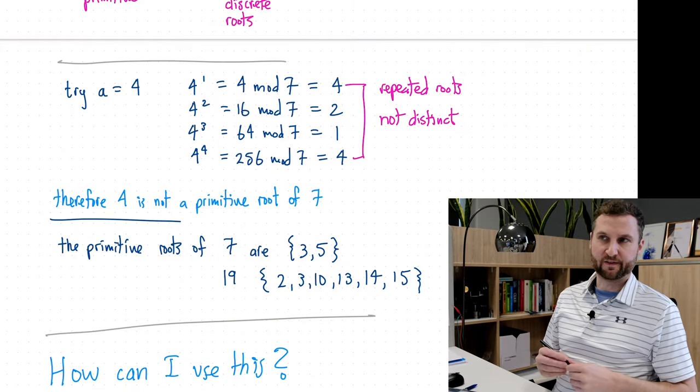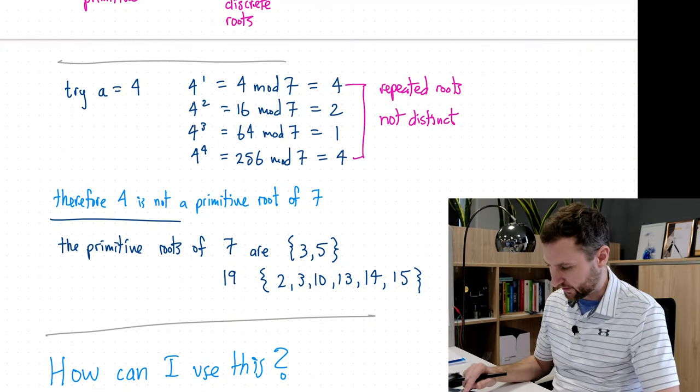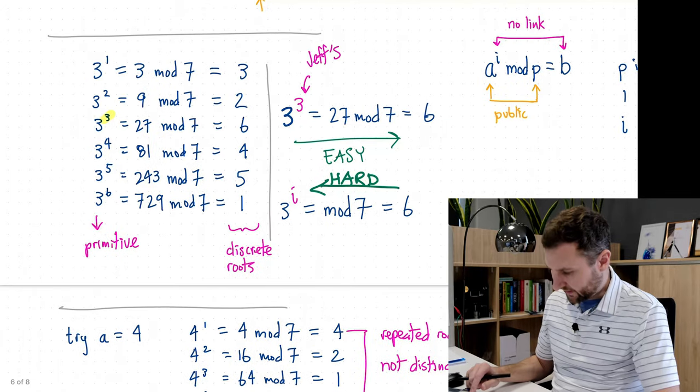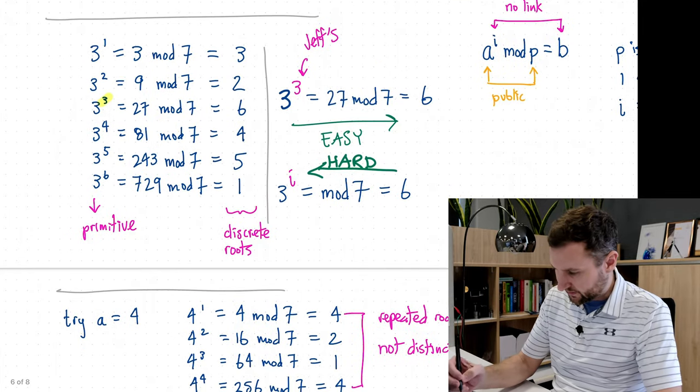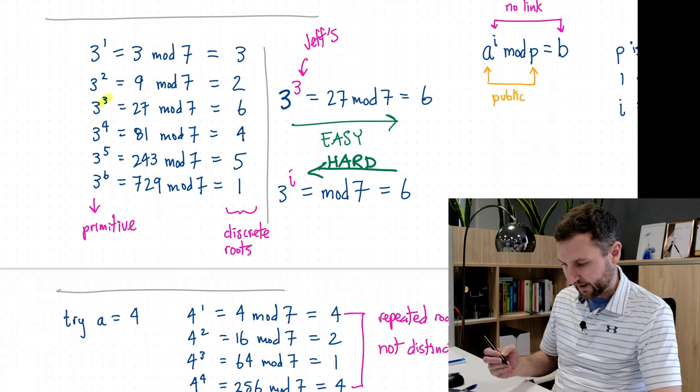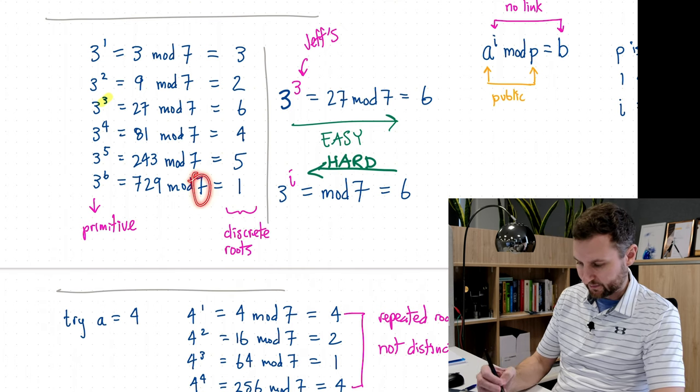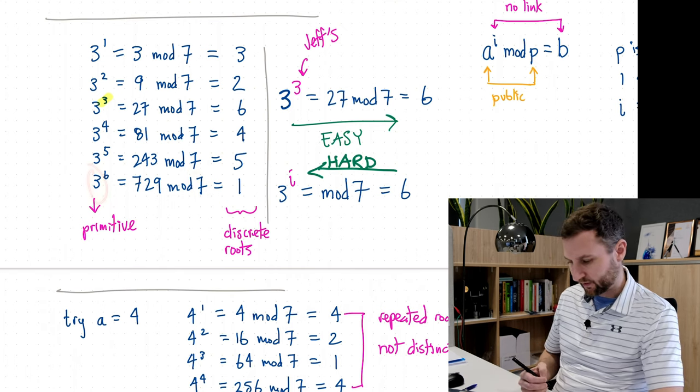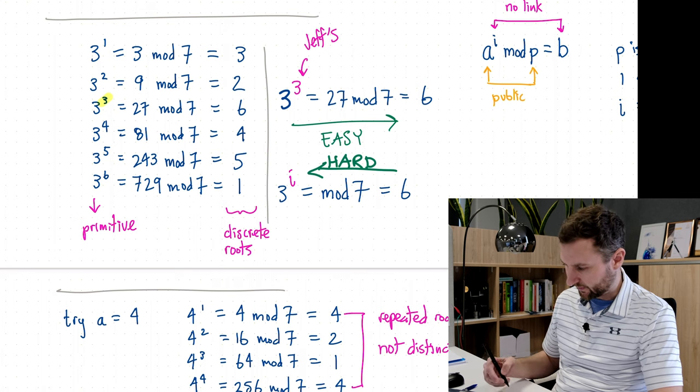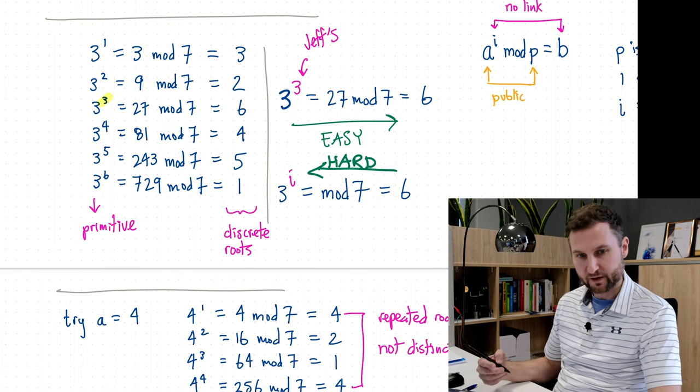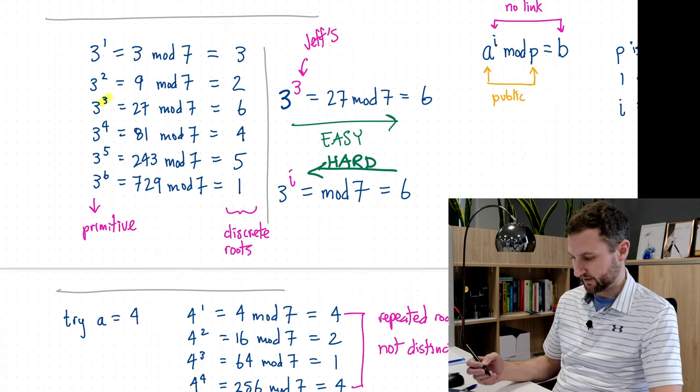Okay, so last time I left off laying out the discrete log problem, and we were about here. And so I had 7 as my prime number, and 3 as my primitive, and I found that 3 was a primitive root of 7.